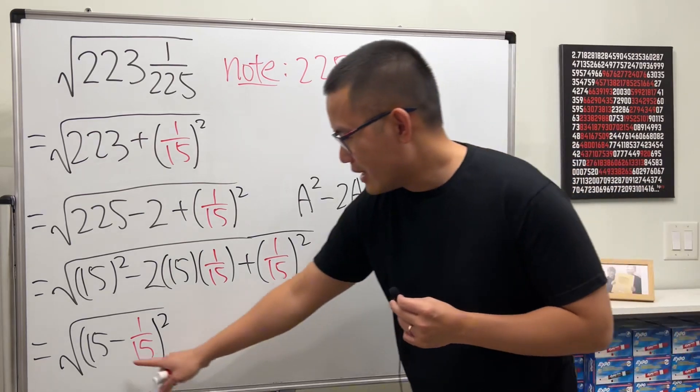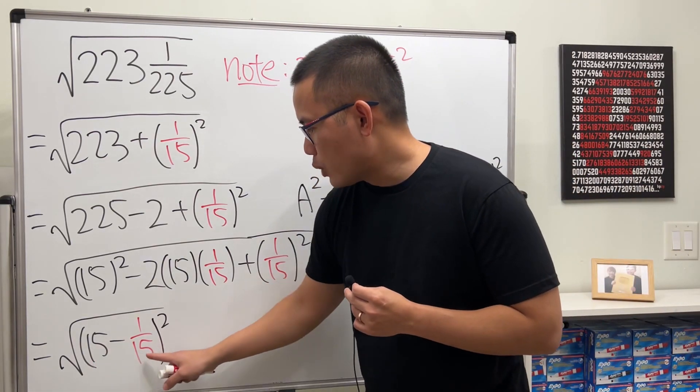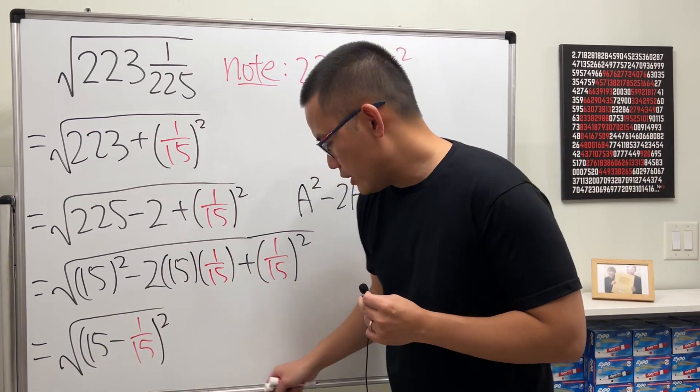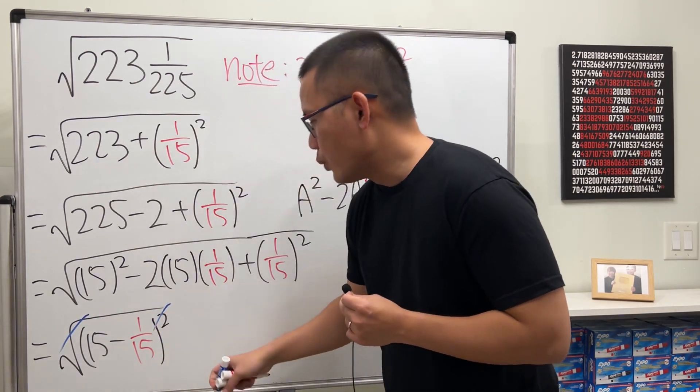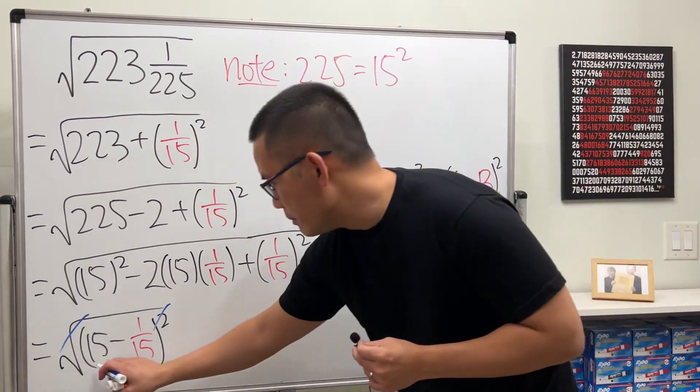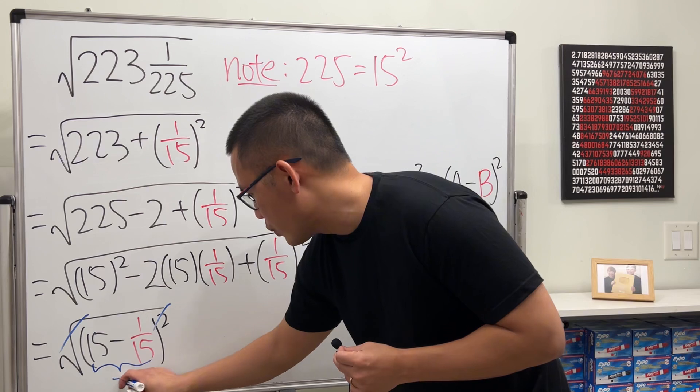Now, check this out. The inside here, 15 minus 1 over 15 is positive. So, if we cancel the square root and the square, we will just get a positive result. Let me just indicate that. This right here is greater than 0.